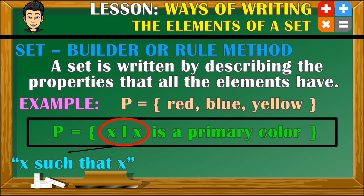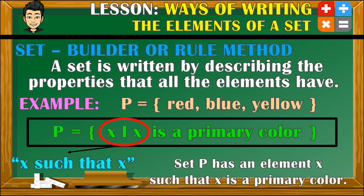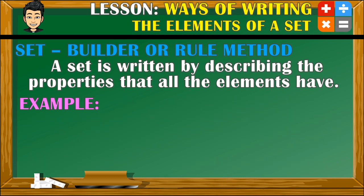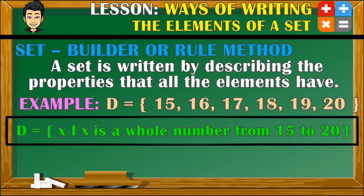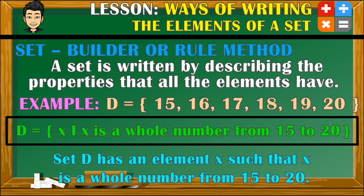Now how do we read our answer? We say that set P has an element x such that x is a primary color. The x that we talk about here refers to each element. Next, let's have set D with the following elements. Looking at the elements, we can describe them as whole numbers from 15 to 20. Therefore, to represent the given set in rule method, we write it like this. We say that set D has an element x such that x is a whole number from 15 to 20.